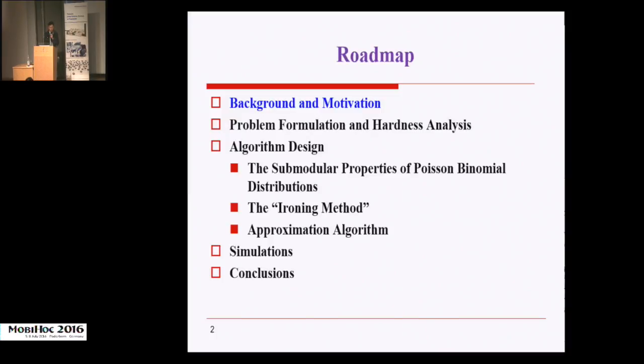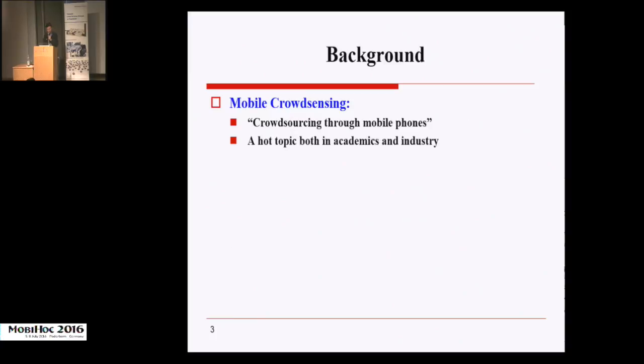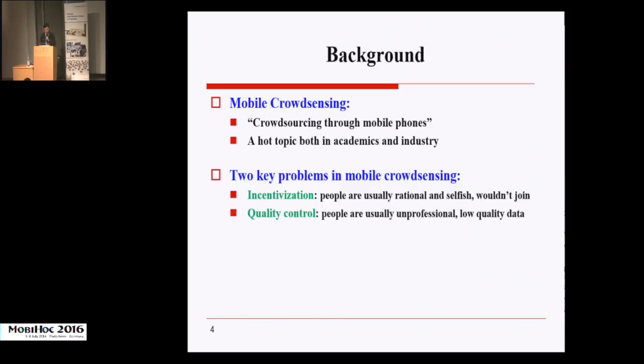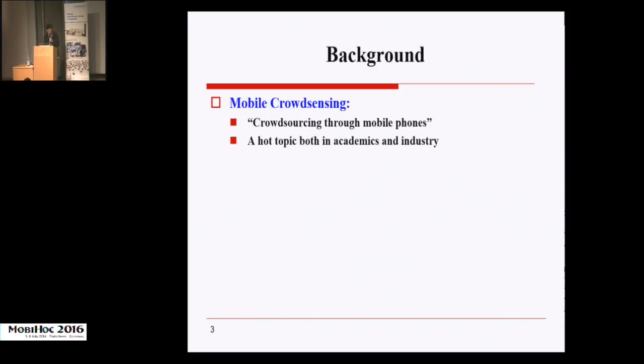Firstly, we will introduce the background and motivation. The idea for mobile crowdsensing is to collect information through handheld devices such as mobile phones. Although it has been proved successful in many applications, mobile crowdsensing has two key problems: incentivizing and quality control.